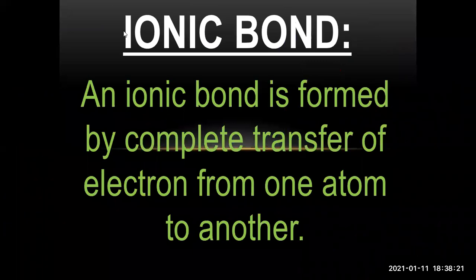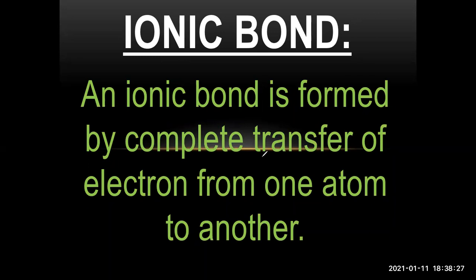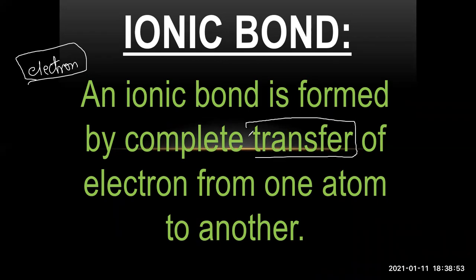Now we have the first type of bond, which is ionic bonding. Ionic bonding is a chemical bond formed by the complete transfer of an electron from one atom to another. If an electron is completely transferred from one atom to the other, an ionic bond is formed.